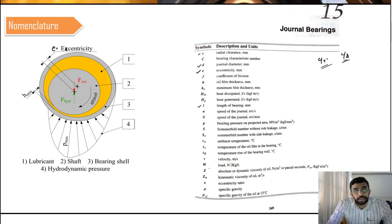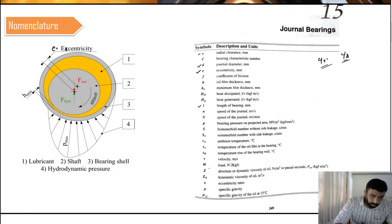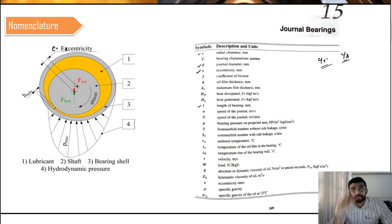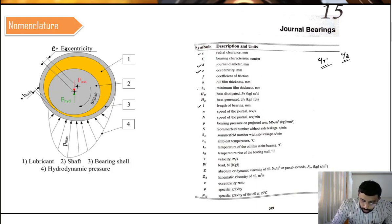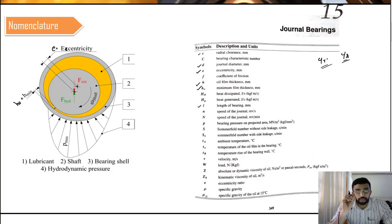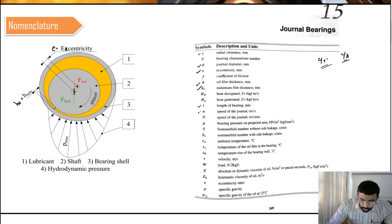When we look at the pressure distribution of the journal bearing, the maximum pressure is not located exactly at the minimum film thickness — it is at a different point. The thickness of the oil available between the shaft and the bearing is called H minimum, denoted by H naught. H is a general term for oil film thickness, but H naught specifically refers to the minimum oil film thickness between the shaft and the bearing.